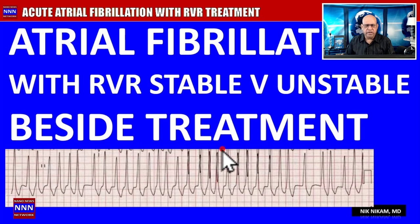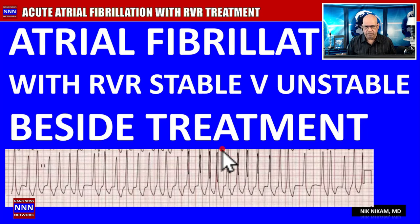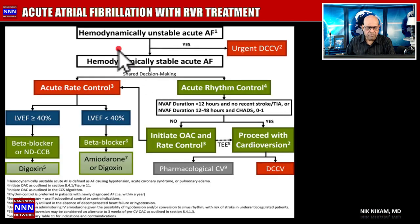The feature presentation for today is atrial fibrillation — acute atrial fibrillation with rapid ventricular response, stable versus unstable, bedside treatment. You are called into an emergency room to see a patient with a heart rate of 190 or maybe 200. The patient is sweating, short of breath, and has some discomfort. Watch this entire presentation and you will know what to do when dealing with atrial fibrillation with rapid ventricular response.